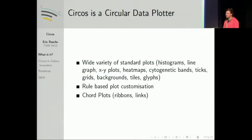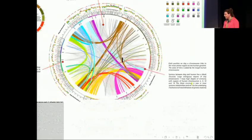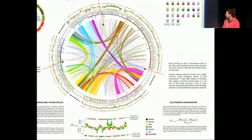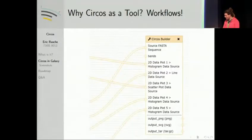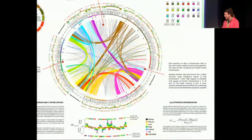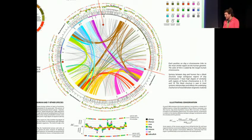But it also does chord plots, which are a lot more interesting for genetic information. You can show relationships and links between multiple organisms. Here you can see your standard CIRCOS plot, absolutely overwhelming with the amount of information they've squashed in there. But it's what people want and what people like.